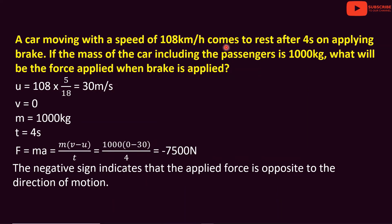The final velocity V is equal to 0, since the car comes to rest. The mass M is equal to 1000 kg and time T is equal to 4 seconds. Using Newton's second law, F equals m into (v minus u) divided by t. That gives F equal to 1000 into (0 minus 30) divided by 4, which equals minus 7,500 N.